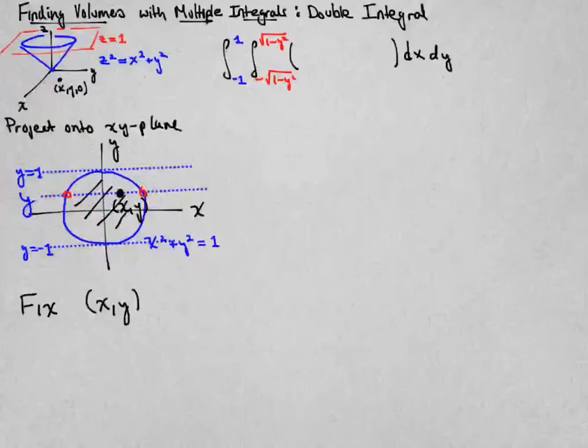I want to think about extending a line vertically parallel to the z-axis through my region, and it's going to enter the cone and exit at the top there at that plane z equal to 1.